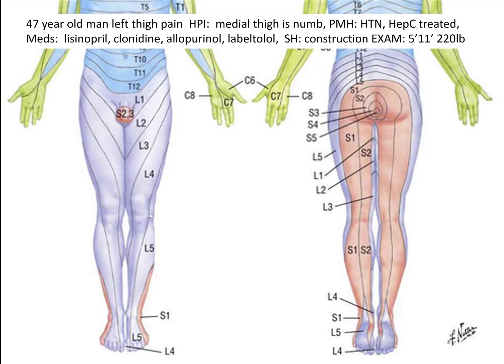How can you pull on the upper lumbar nerve roots? You extend the hip. It's called the reverse straight leg raise test, where you hyperextend the hip to stretch the femoral nerve — which serves the upper thigh. The patient has to lie prone on the exam table and you just pull the leg up.